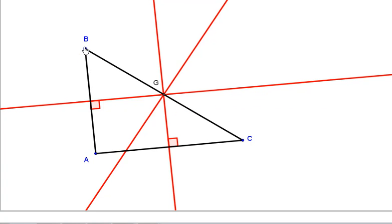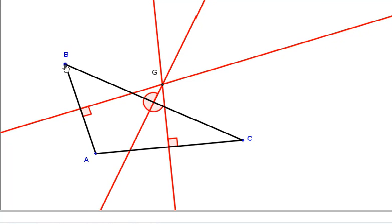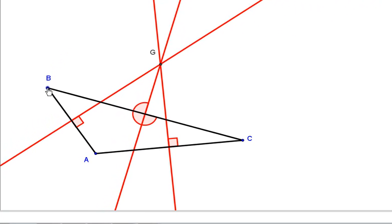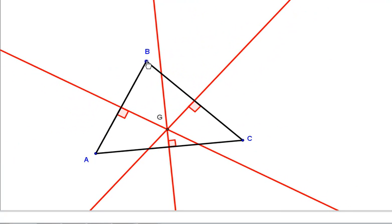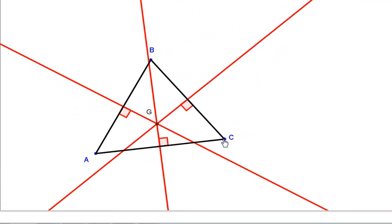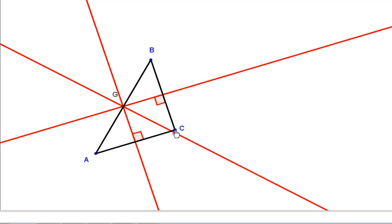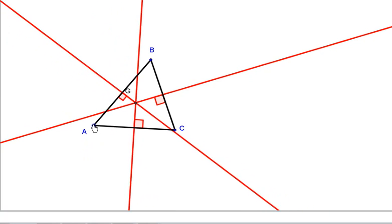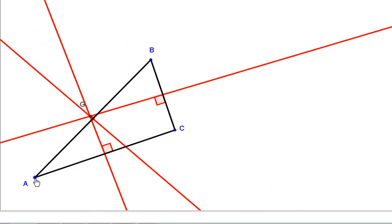And now watch what happens if I make an obtuse triangle. My circumcenter moves outside the triangle. So we have acute, we can have right, and we can have obtuse.